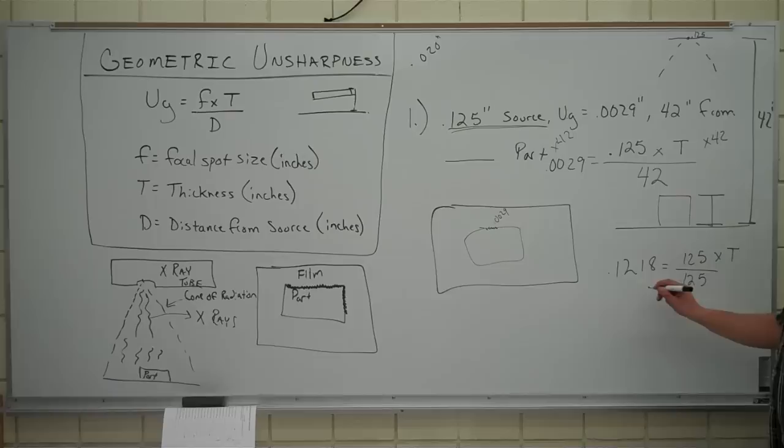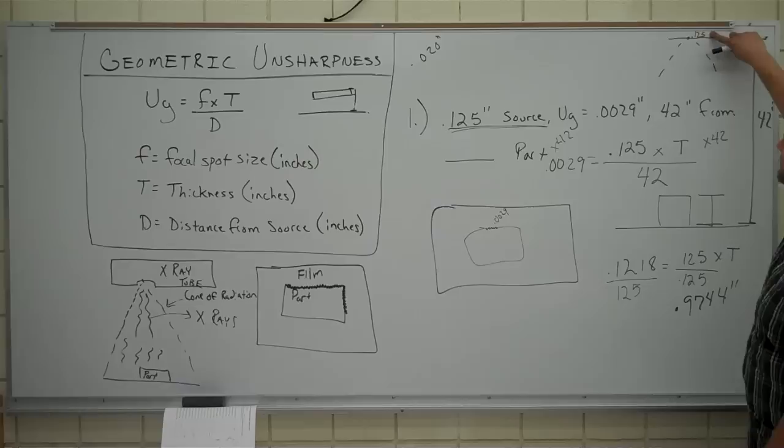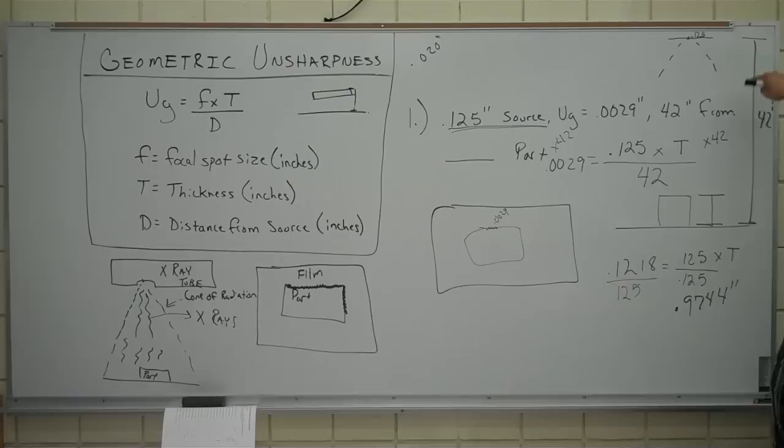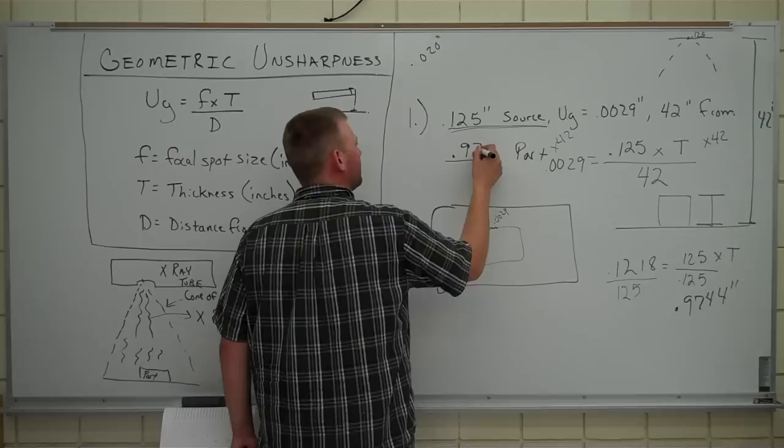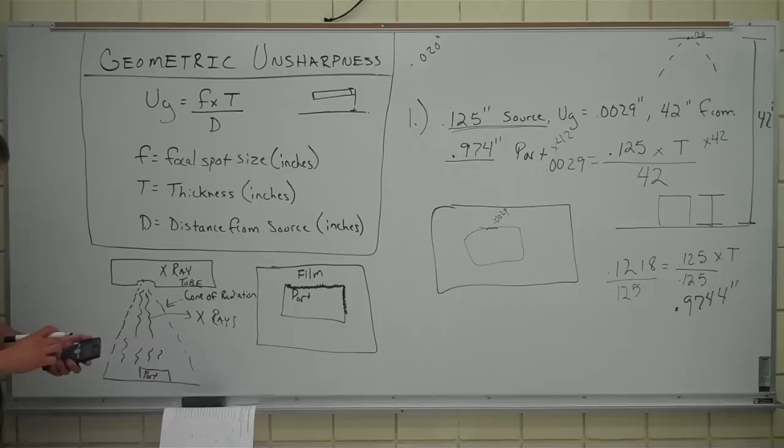From there, we're still trying to get t by himself. Algebra says do one thing over here, you've got to do it over here. So we're dividing out .125 over here, dividing out .125 over here. So we take this number, .1218, divide that by .125. And you're going to get .9744 inches. So this guy says here, .125 inch source. We already know that our UG factor is .0029. This distance is 42 inches from a part that is .974 inches thick.